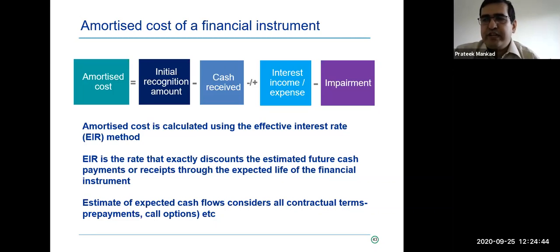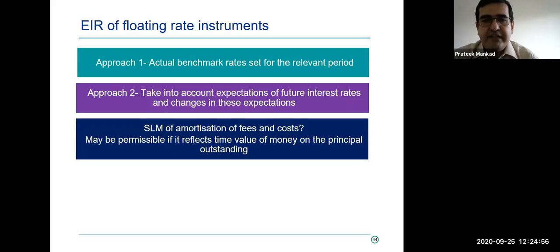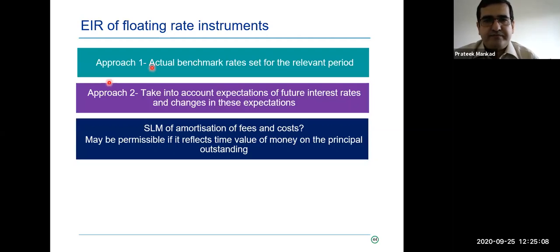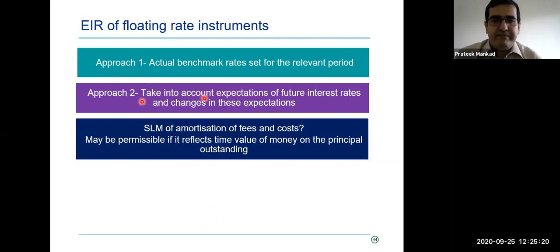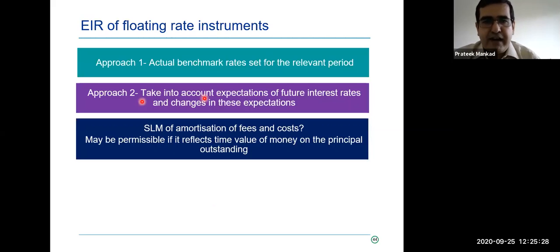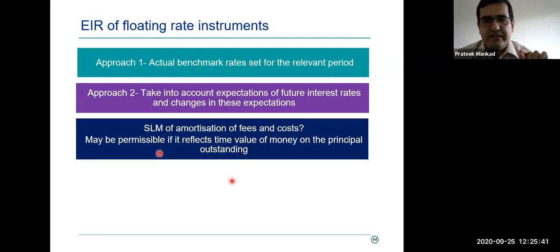Very commonly we see floating rate loans. The problem is we don't know what those payments will be, because today I don't know the LIBOR or MCLR. The standard gives two possible approaches: first, take the rates available today and work out the amortization. Alternative two: every balance sheet date, make a projection of expected cash flows and then amortize. As a more practical solution, if you believe straight-lining reflects the time value of money better, you are allowed to straight-line your fees and costs — but again, this requires assessment and documentation of judgment.